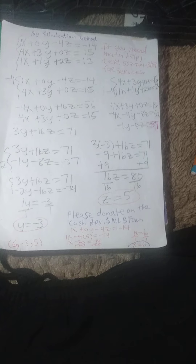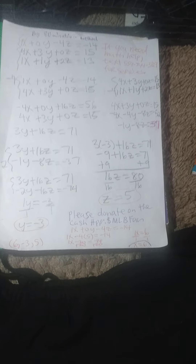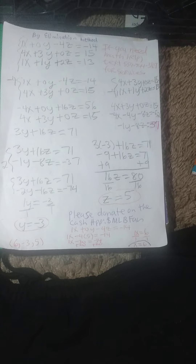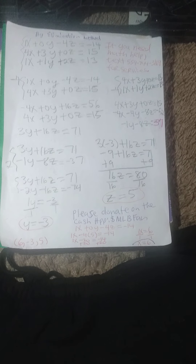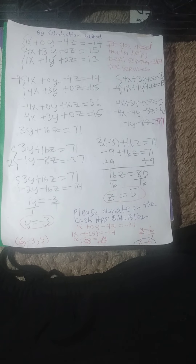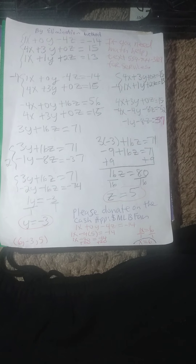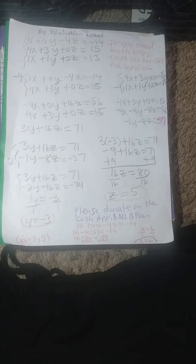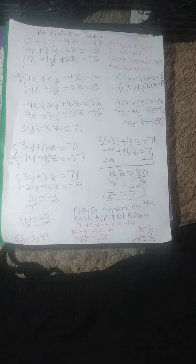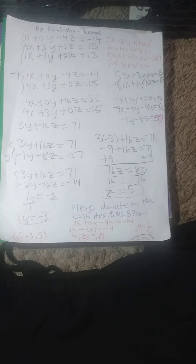I want to multiply row 2 by 2 to eliminate the z column, and row 1 will stay the same. So it will be 3y plus 16z is equal to 71, and then 2 times row 2 will give us negative 2y minus 16z is equal to negative 74. This will simplify to 1y is equal to negative 3.